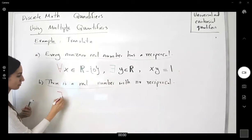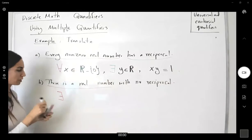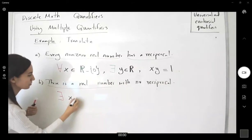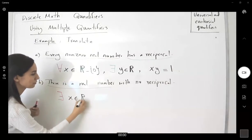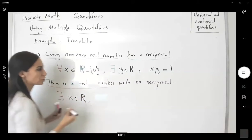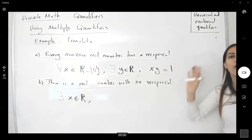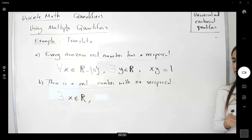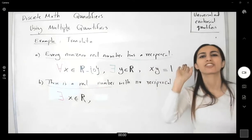There is a real number x in R such that it has no reciprocal. If you take any real number, the multiplication is not one.